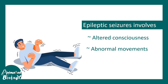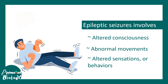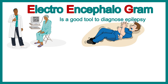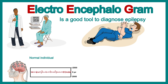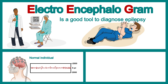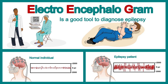There is altered consciousness, abnormal movements, altered sensations and behavior — all leading to uncontrolled brain activity and causing problems for patients. All these things can be diagnosed using an electroencephalogram, or EEG. A normal EEG recording looks a certain way, but if the individual has epilepsy, that would be diagnosed in the EEG traces.